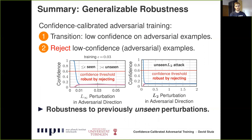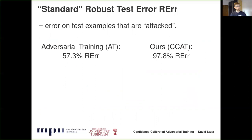In summary, our confidence calibrated adversarial training enforces low-confidence predictions on adversarial examples, and in a second step we obtain robustness by rejecting these examples. Because this behavior is extrapolated beyond the epsilon ball used during training, robustness also generalizes to new threat models. Before presenting actual results, I briefly want to talk about proper evaluation. The standard robust test error is usually computed as the fraction of test examples that are misclassified or can successfully be attacked, and it also subsumes the clean test error.